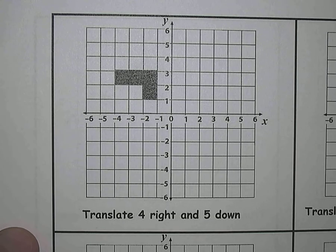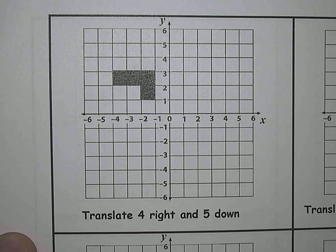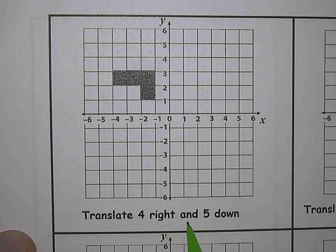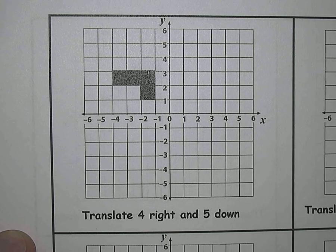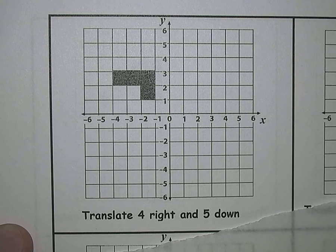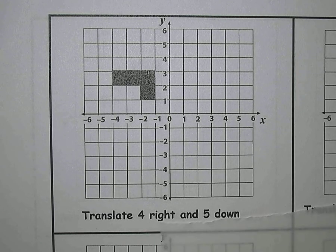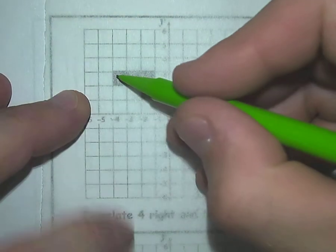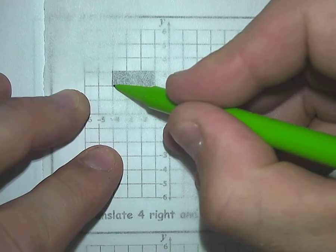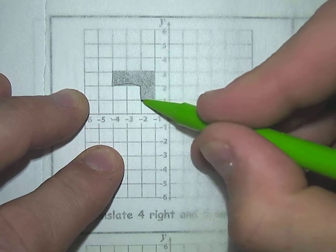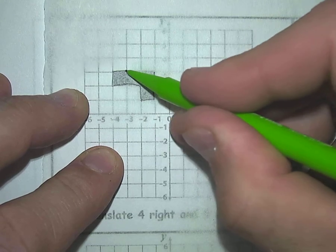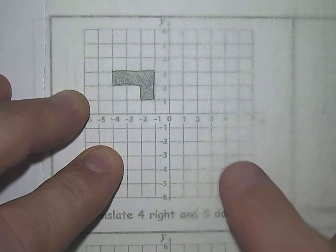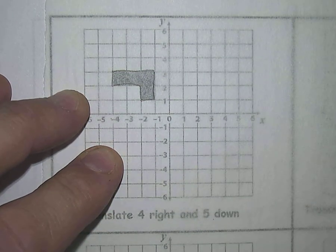Here's a translation. You can see the question tells us to translate the shape four right and five down. And you should always be very careful about your left and right. The second thing about translation is it's very sensible to use a piece of tracing paper. You trace the shape that you're going to translate. Very carefully.